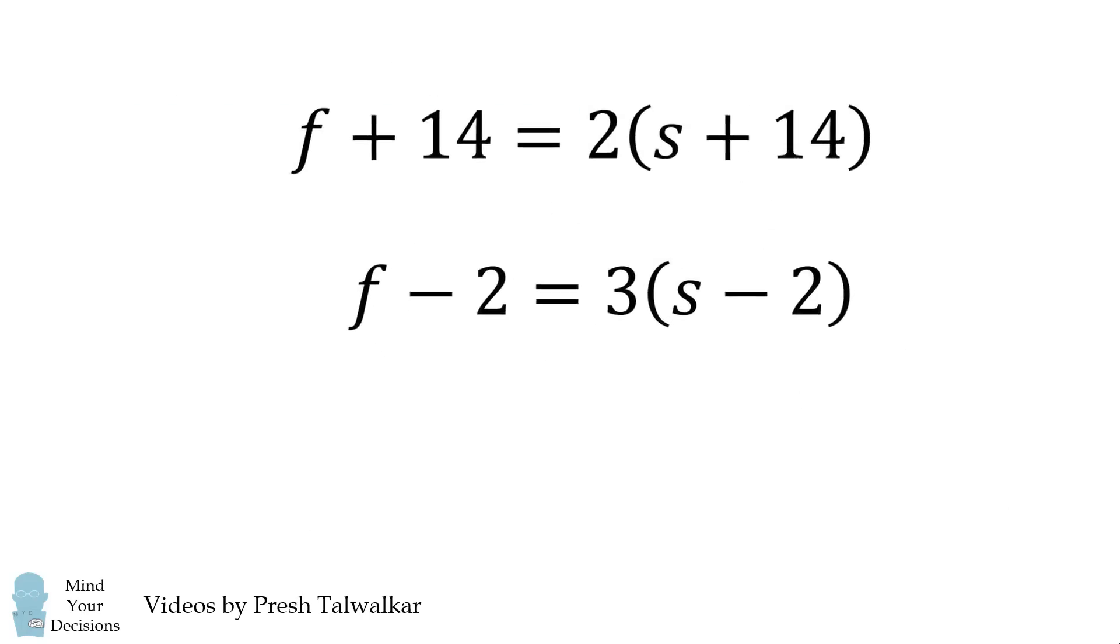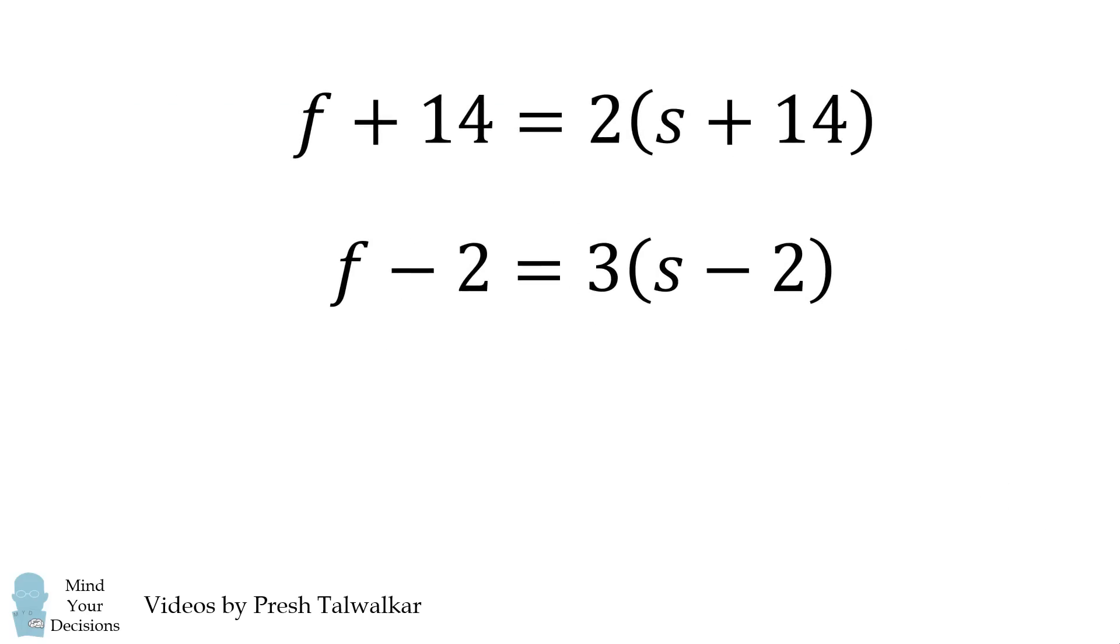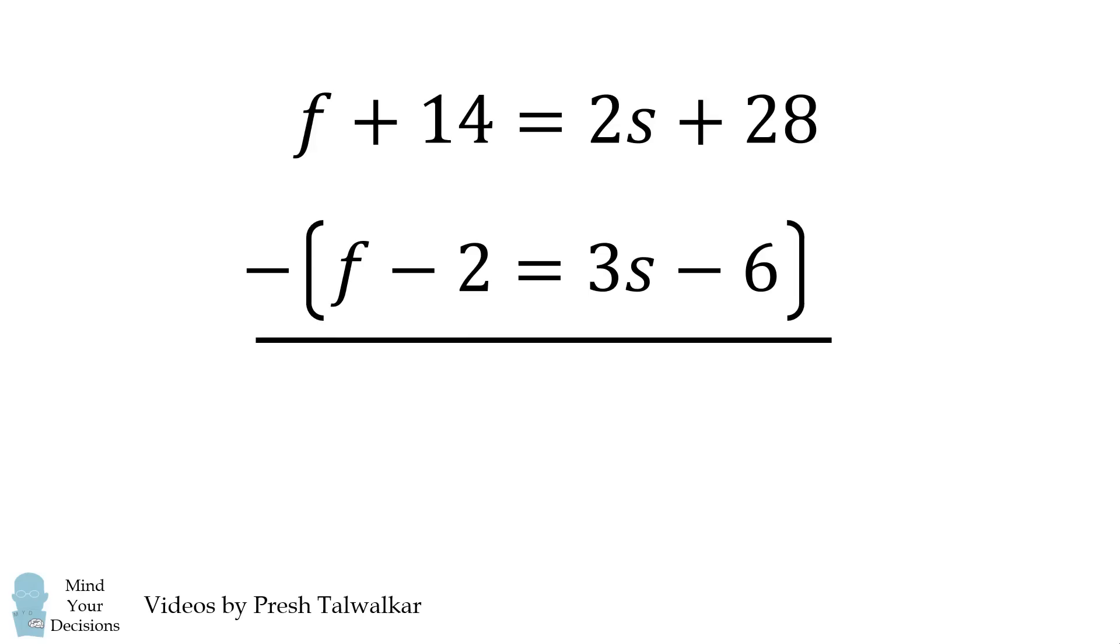We now have a system of two equations and two variables. We'll first distribute in each equation. Then we will subtract the second equation from the first. The variable F cancels out. We have 16 is equal to negative S plus 34.